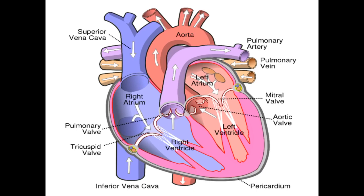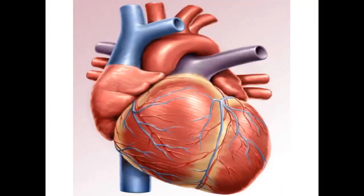The two upper chambers are called the left atrium and right atrium, and the two lower chambers are called the left ventricle and right ventricle.